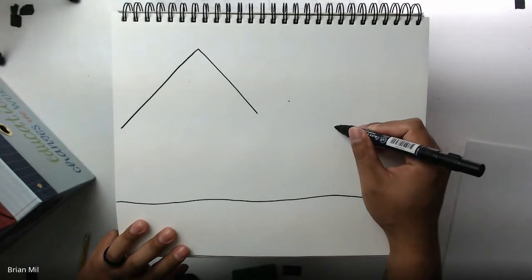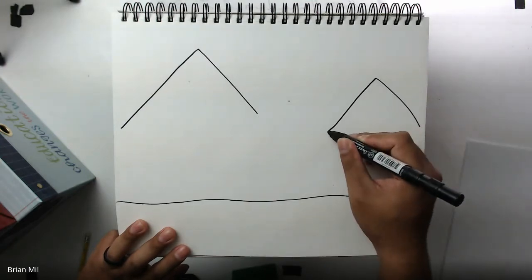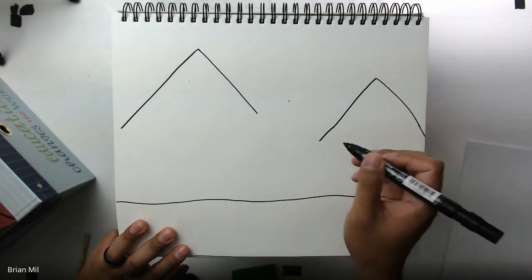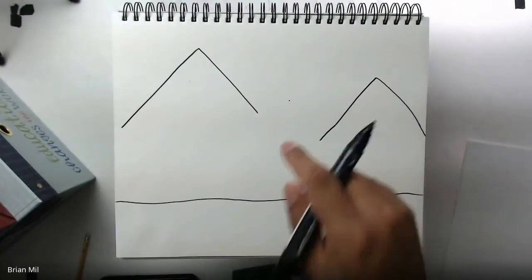And then my next one, I'm going to do a small triangle over here. But look how much shorter it is. It's right around there. Notice how this triangle is a lot lower than the other one.